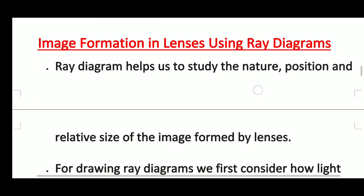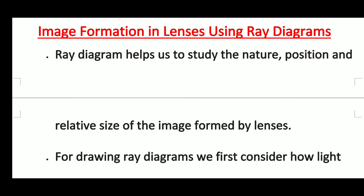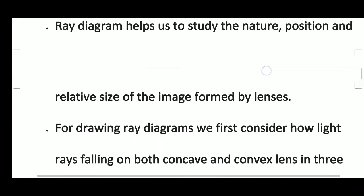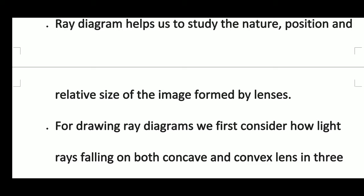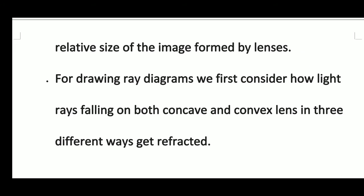Now we will see image formation in lenses using ray diagrams. For ray diagrams, we will take the image formation by drawing rays. Ray diagrams help us study the nature, position, and relative size of the image formed by lenses. For drawing ray diagrams, we first consider how light rays falling on both concave and convex lenses in three different ways get refracted.